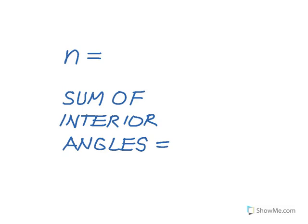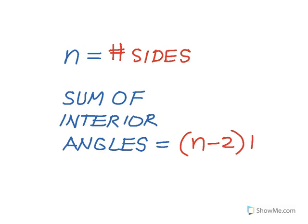So for any polygon, if we let n represent the number of sides of the polygon, there's a simple formula to find out what the sum of the measures of all of the interior angles is. And that is two less than the number of sides, so n minus two, times 180 degrees.